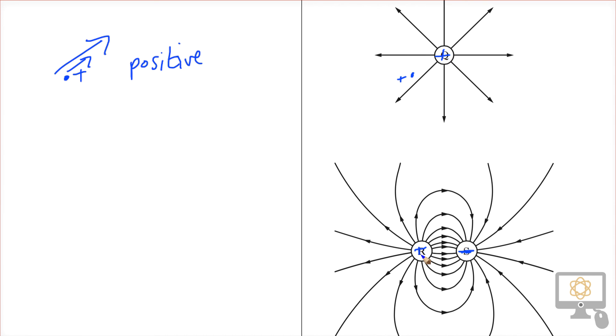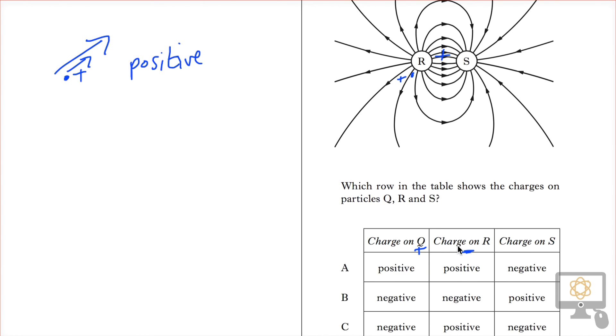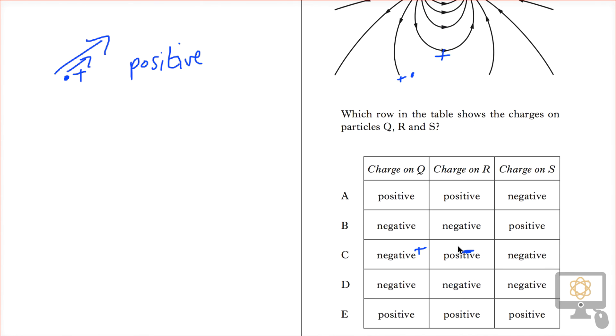So that's really what we've got. Q is positive, R is positive, and S is negative. So let's have a look down the page and see what our answers are. Q positive, R positive, S negative. Therefore our answer is A.